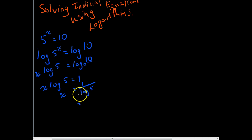Now when you type that into your calculator, you can use a scientific calculator or your graphing calculator. 1 divided by log base 10 of 5 will be 1.431 to three decimal places at least.